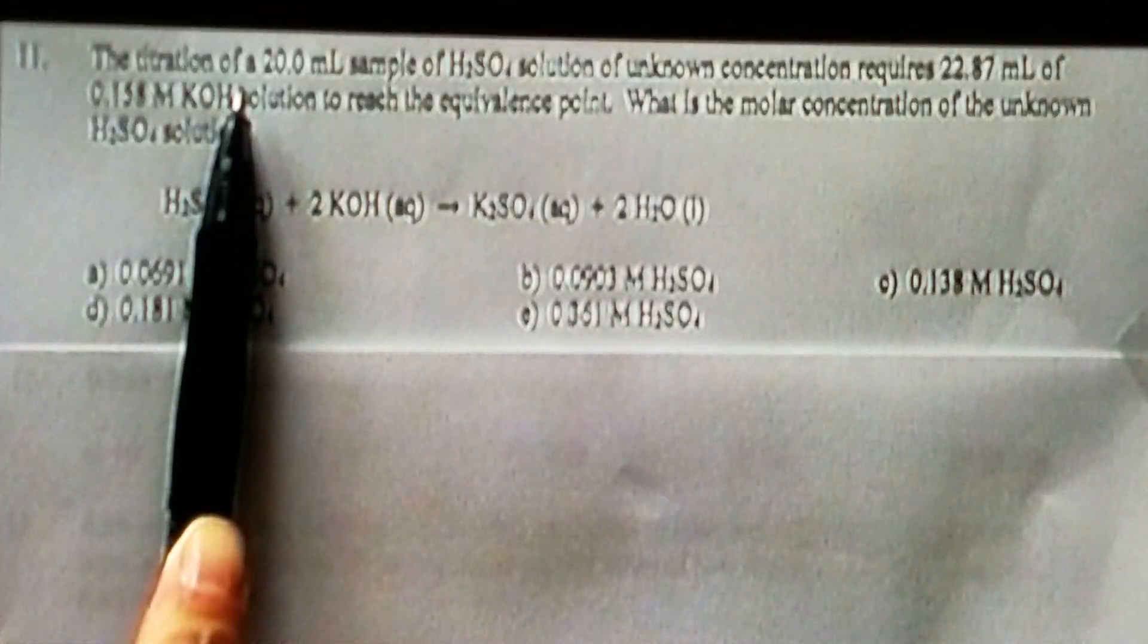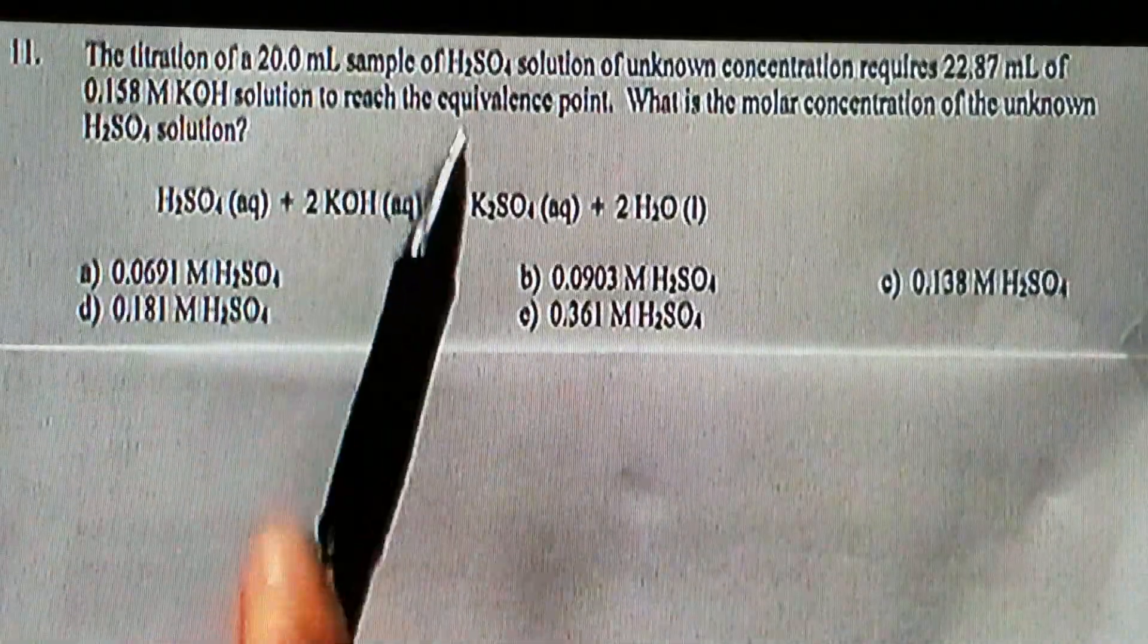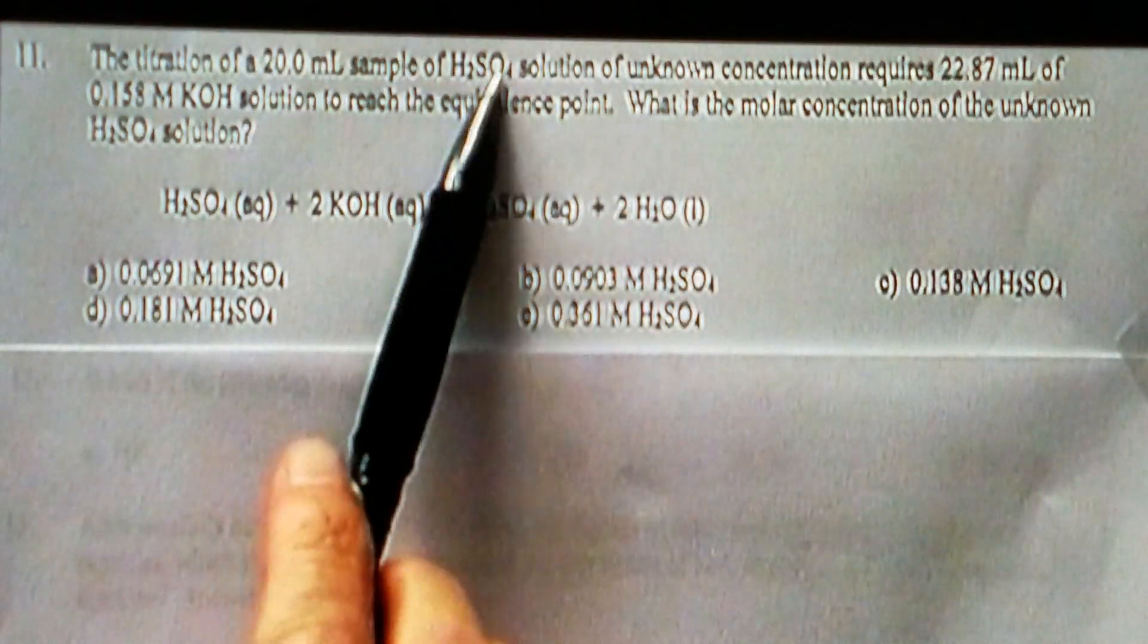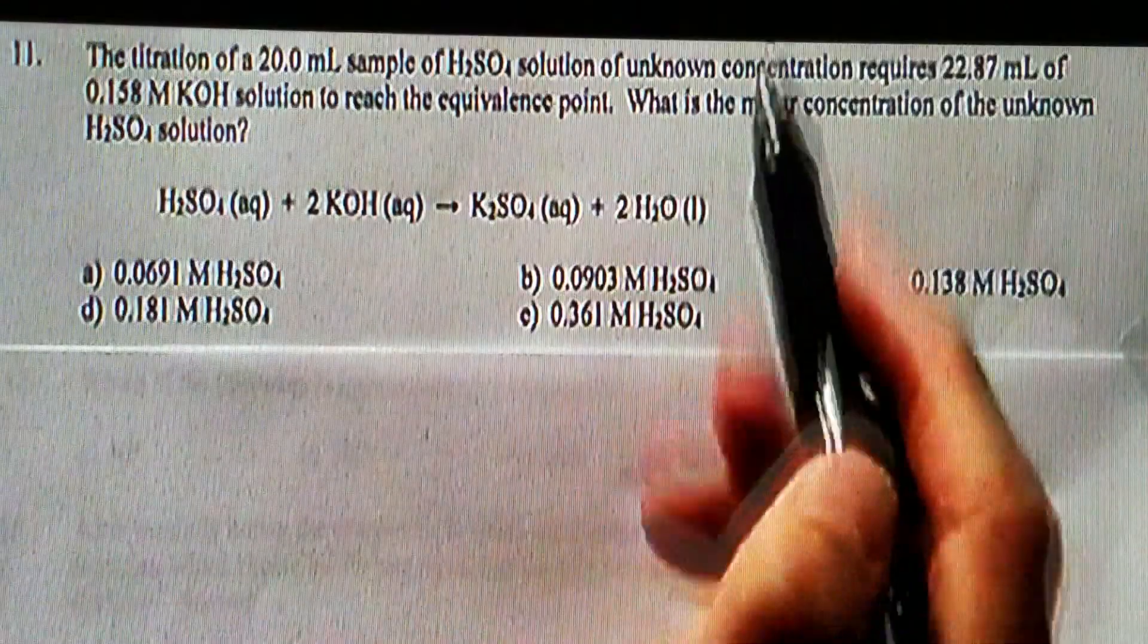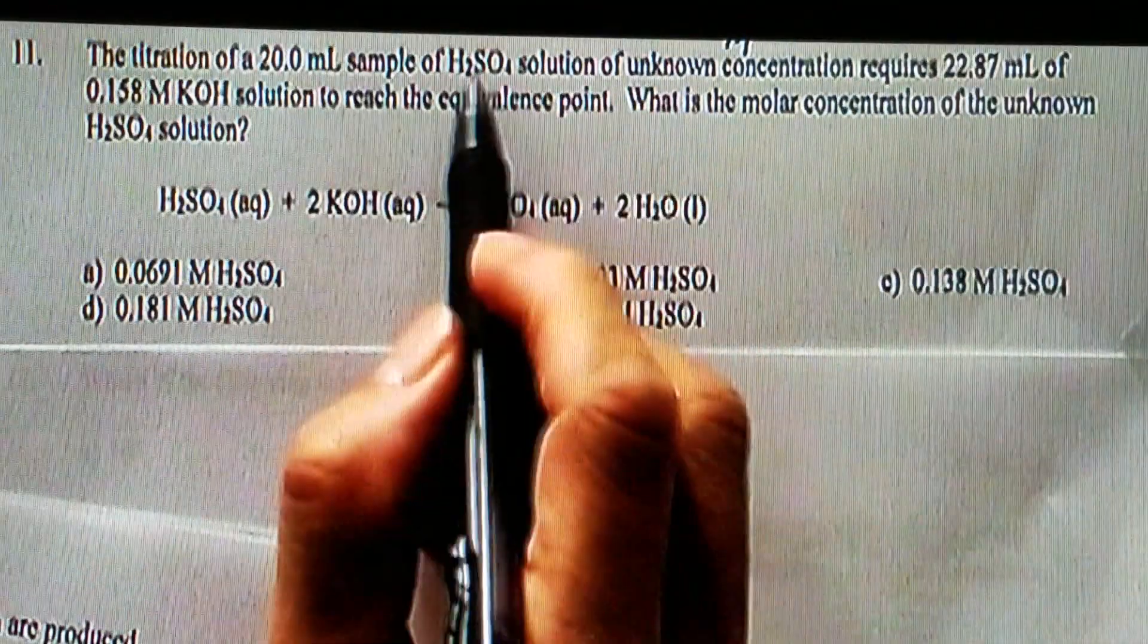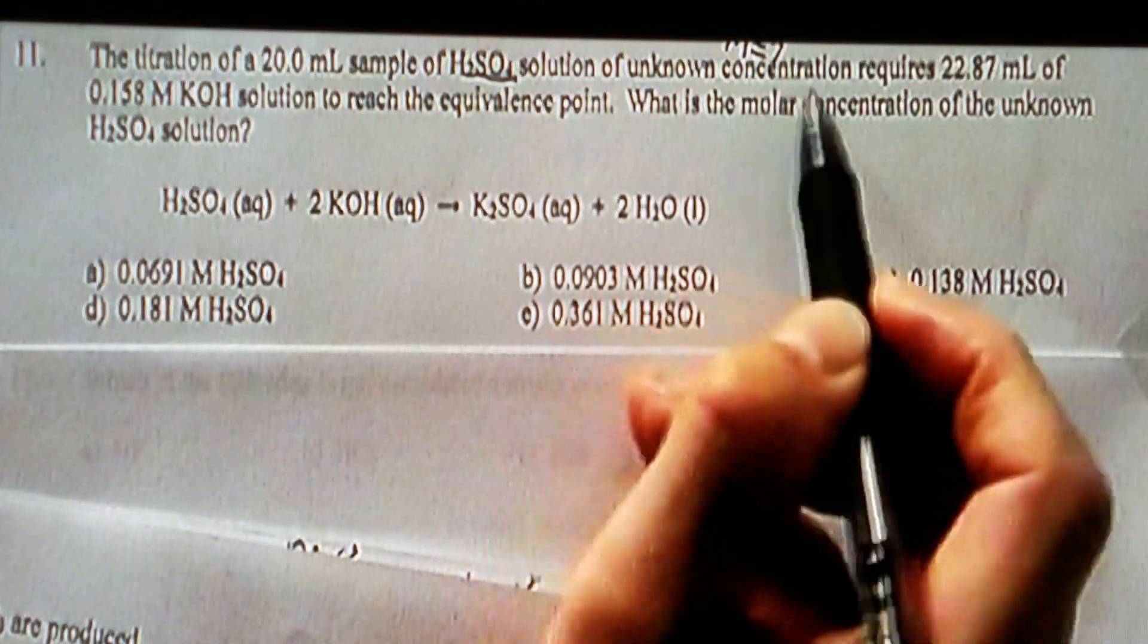This is a titration question. So the unknown solution is actually sulfuric acid. We know the volume, we just don't know the concentration. So that's the one we are going to find out, the concentration, the molarity of sulfuric acid. We need to find out what is that.